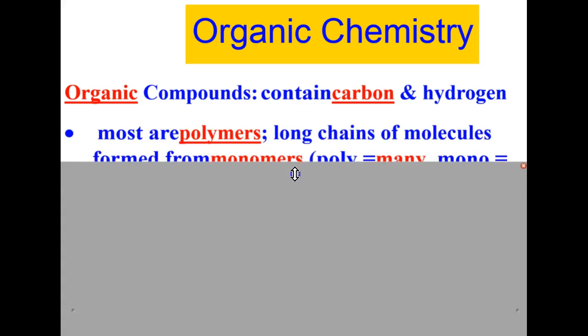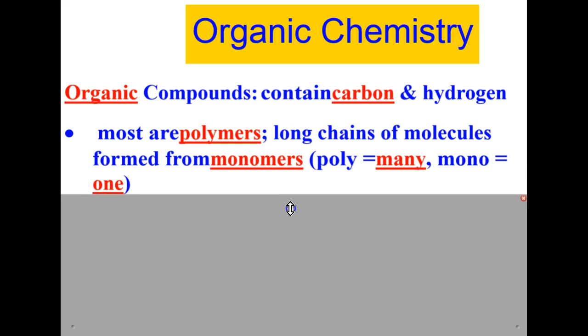Most are polymers. Polymers are long chains of molecules formed from what are called monomers. Practicing your prefixes here, poly means many while mono means one. So it makes sense that a polymer would be made up of many monomers, which is just one chain of molecules.